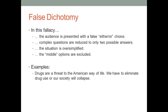The next fallacy is called the false dichotomy. This is the fallacy of reducing something to black and white when, in fact, there can be many shades of gray in between. In this fallacy, the audience is given an either-or choice: either you're for us or against us; either you support the president or you're not a good citizen. The situation is oversimplified, and many options are excluded.